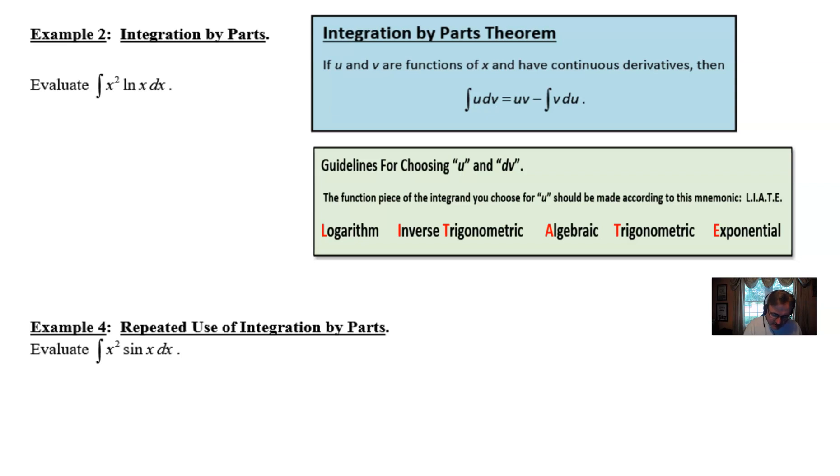For our particular problem, the integration of x squared natural log of x, we're going to let the u be what the LIATE suggests. So we go through the progression and our first thing that we come across is logarithm, and lo and behold we have a logarithm in our integrand. So that's going to be our u expression, which means our dv expression has to be everything else that we see, which in this case is the x squared dx.